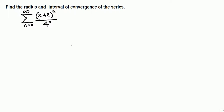Find the radius and interval of convergence for the power series. We have x plus 2, which is the same as x minus negative 2, so the center is negative 2. We know a power series always converges for x equals a — in this case x equals negative 2 — so this series converges.